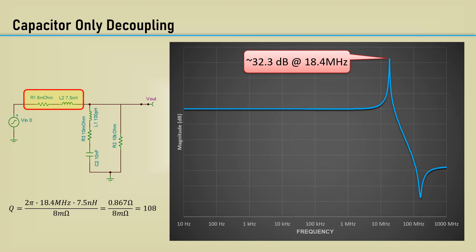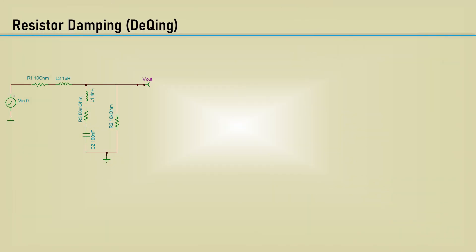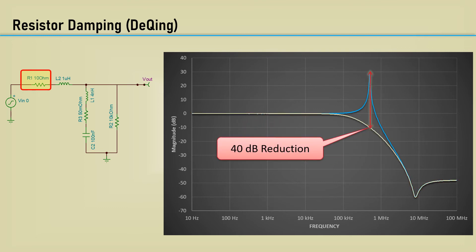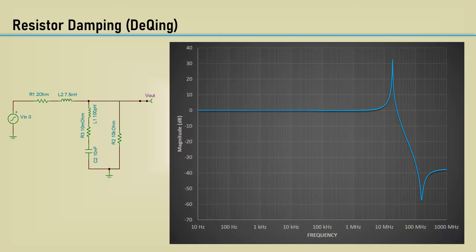The way to remedy this problem is to reduce the Q of the network. Let's go back to the 1 µH decoupling network and add a 10 ohm series resistor. That eliminates the resonance, resulting in a 40 dB reduction. It's technically damping, but some people call it de-Q-ing. In the case of the capacitor and the microstrip trace, playing around with various resistance values in the simulation, it only took 2 ohms to damp that resonance by 40 dB.